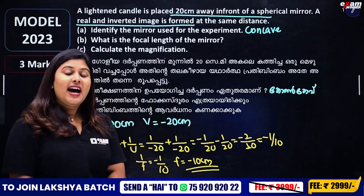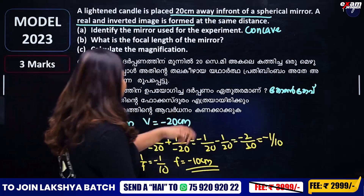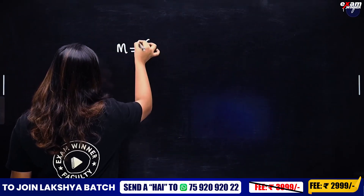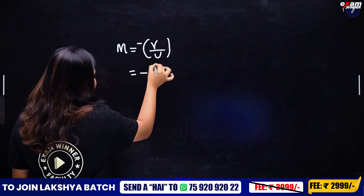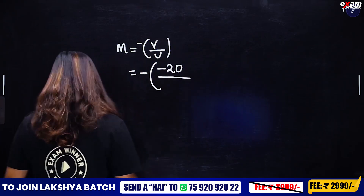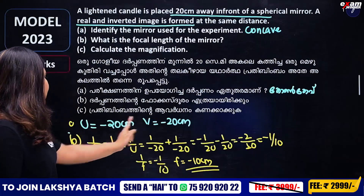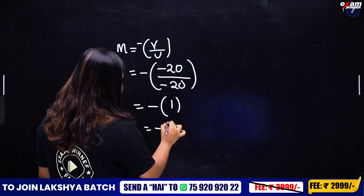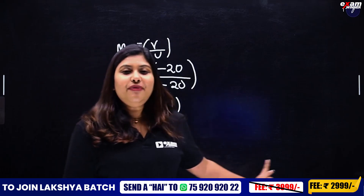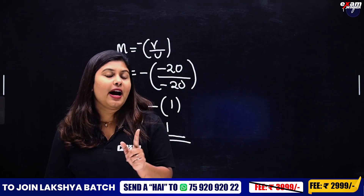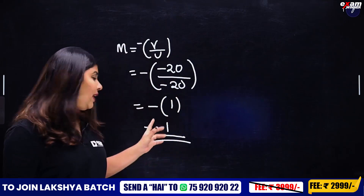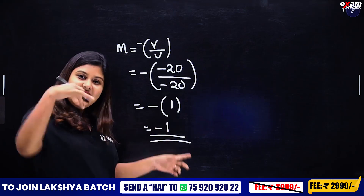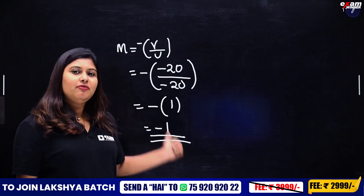Calculate the magnification. That is equal to minus 20 by minus 20, so minus 20 divided by minus 20 equals minus 1. That is minus 1. What does this minus mean? Magnification minus 1 means the image is inverted.